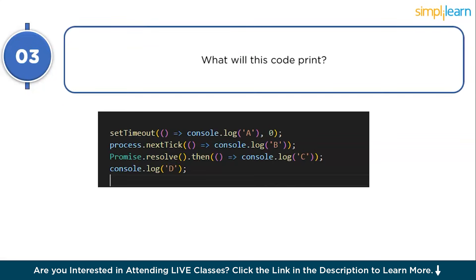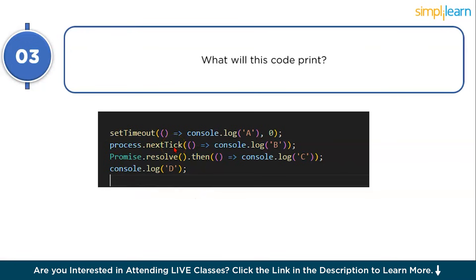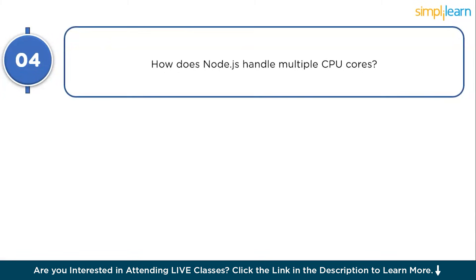Question 3: what does this code print? We have setTimeout(console.log('a'), 0), process.nextTick, Promise.resolve, and console.log('d'). Applying the concepts from previous questions: the first output is 'd' (synchronous), then 'b' (process.nextTick, micro task), then 'c' (Promise.resolve, next micro task queue), and finally 'a' (setTimeout, macro task). This is a tricky interview question.